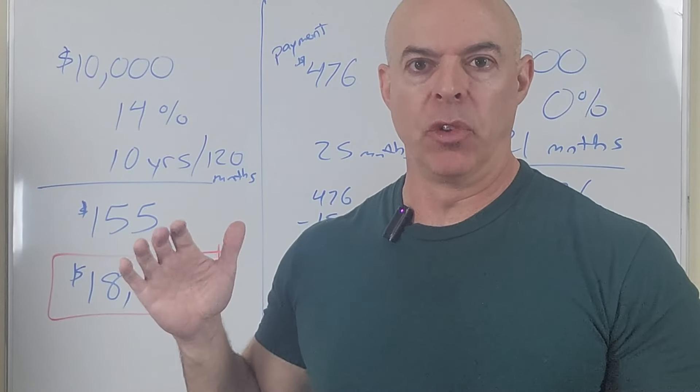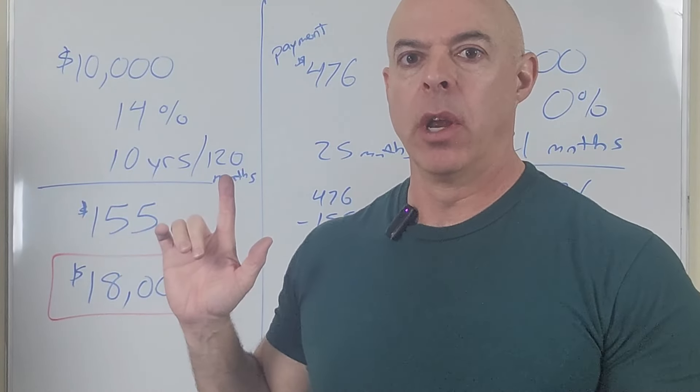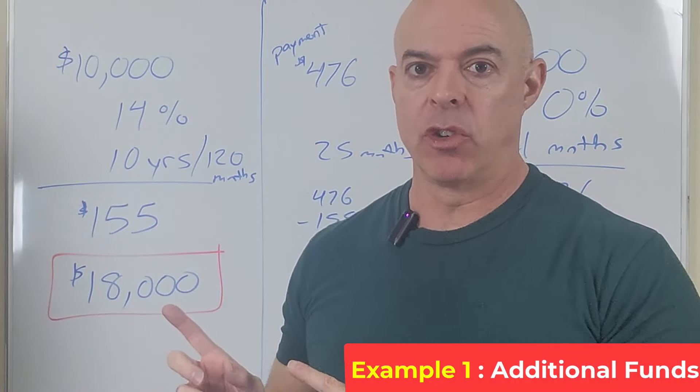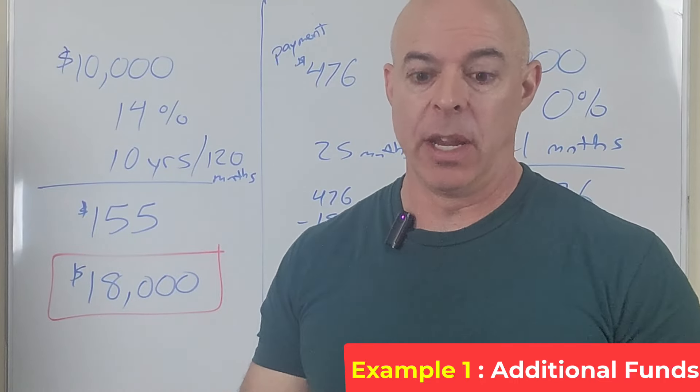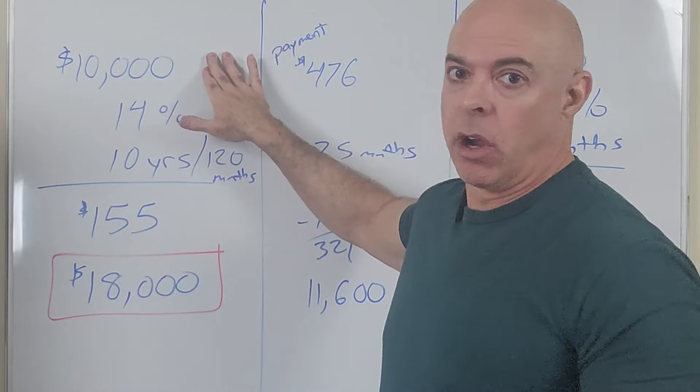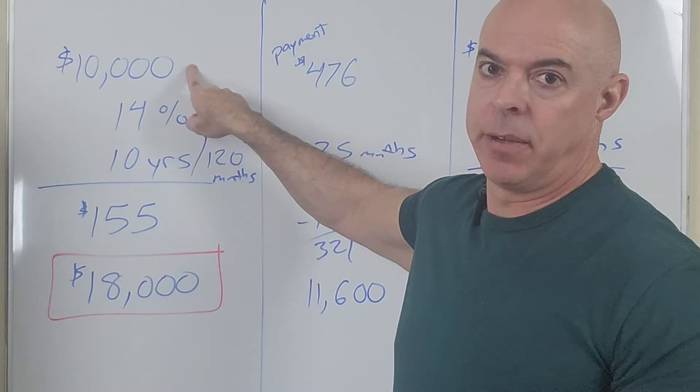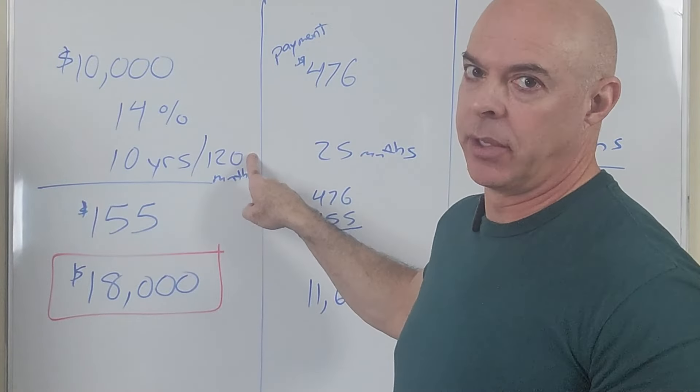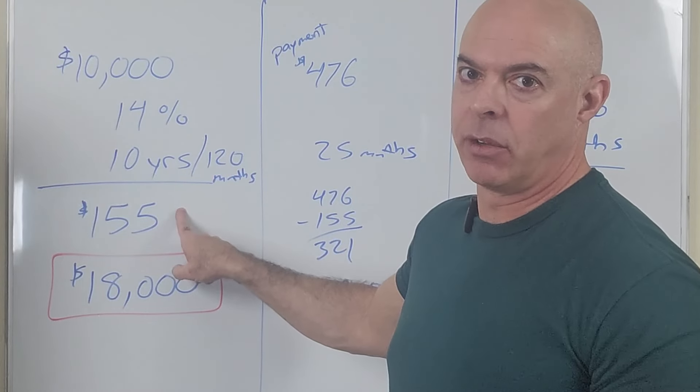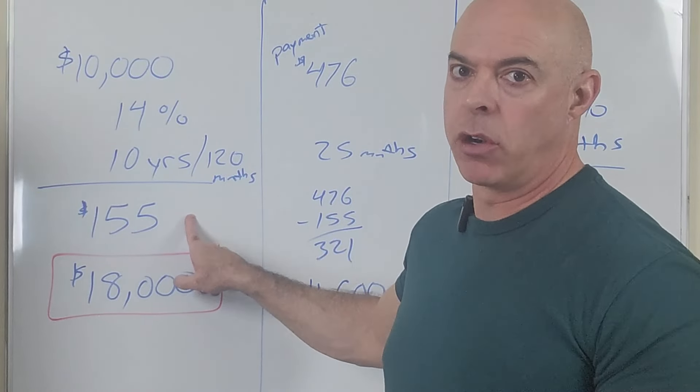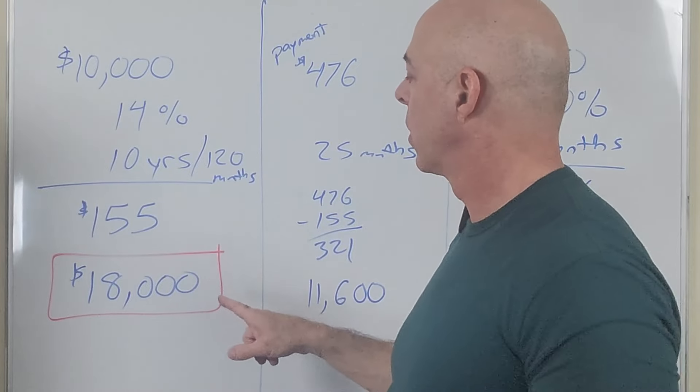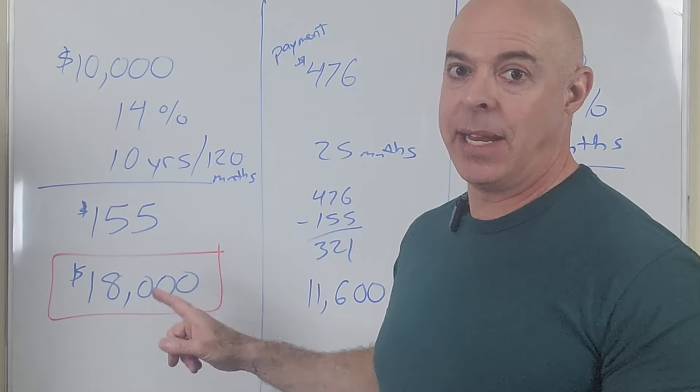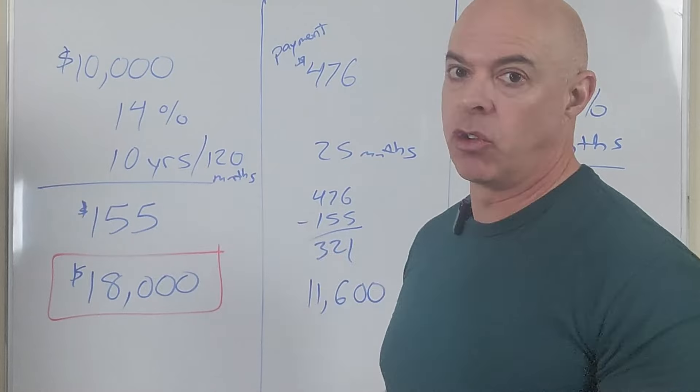Okay, so I went ahead and put up the examples on the board. Now this is the first of two. This is where you were able to find additional funds to increase your payment. The next example I'll show you is where you didn't and you have to keep making the same payment. Like this scenario I was talking about was the individual, they've got $10,000 in student loan debt. It's at 14% and it's 10 years or 120 months. Their payment is around $155. Part of that is going to principal, part of that is going to interest. Now at the end of this time, if they just keep making that payment, they're going to end up paying a total of $18,000 and it would have taken them 120 months.